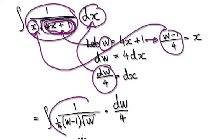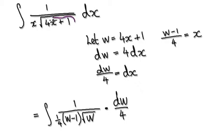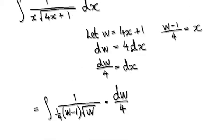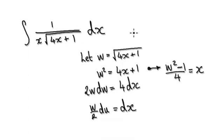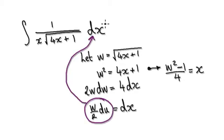...the whole thing here will become this. But this is very complicated. A better substitution — rather than making just this as w — would be to make the whole thing here, including the square root, be w. So let w be the whole thing including the square root. Square both sides and this gives you this. Then differentiate both sides to obtain dx — that gives you this — then divide both sides by 4, so dx equals this.